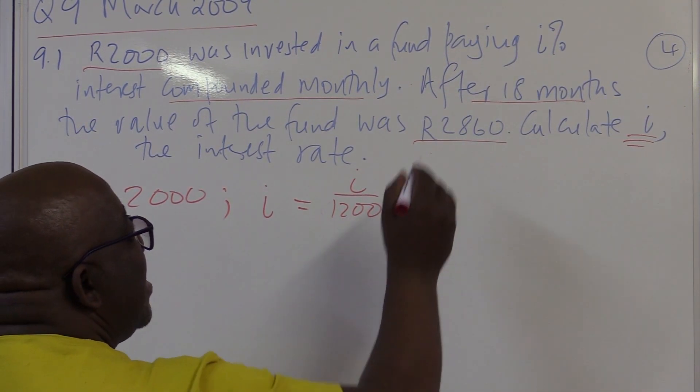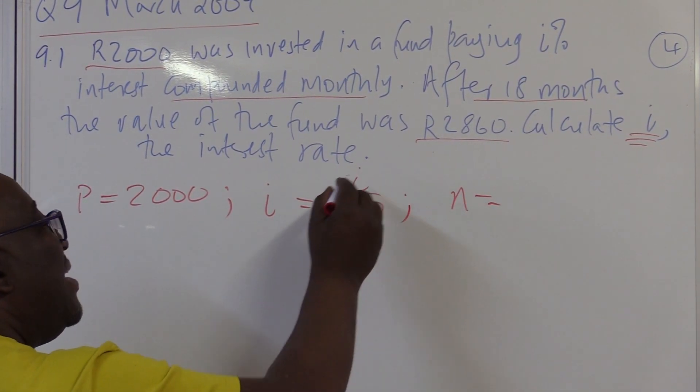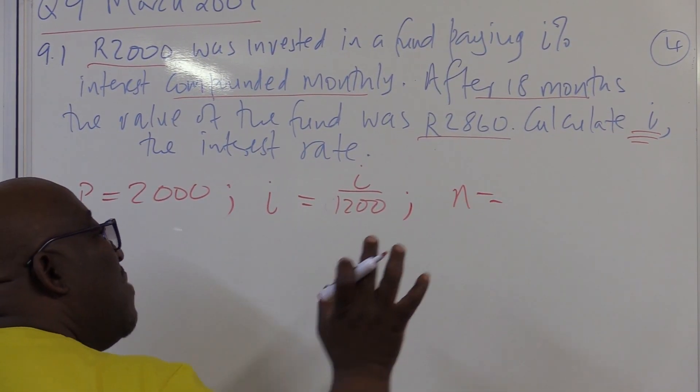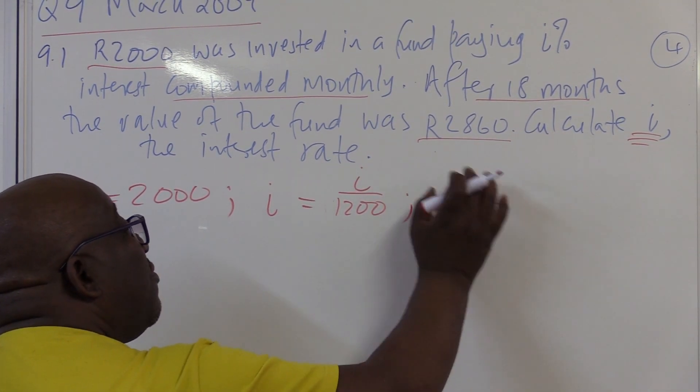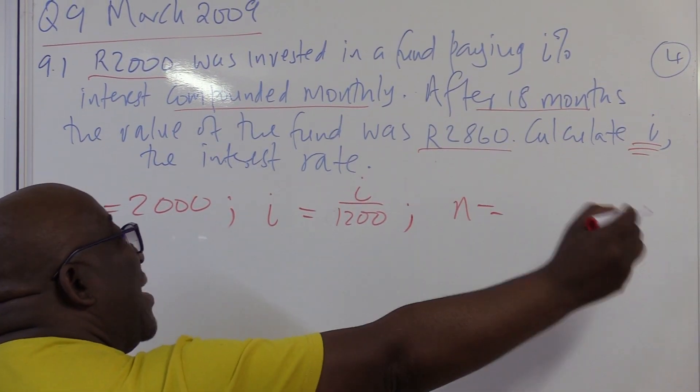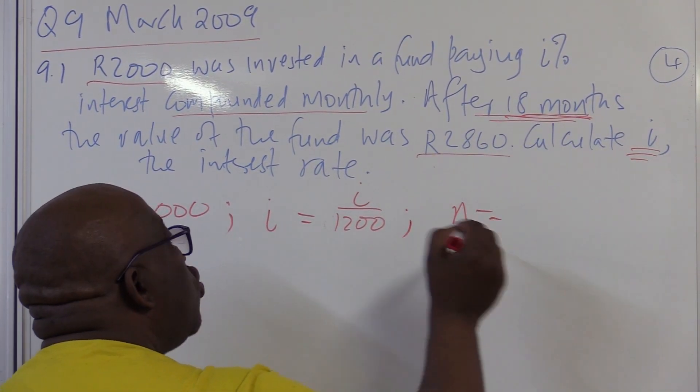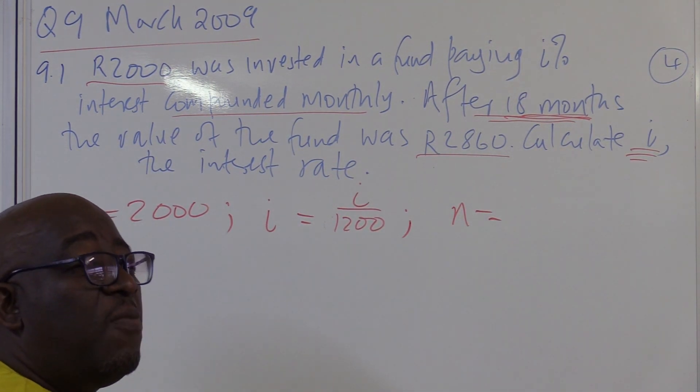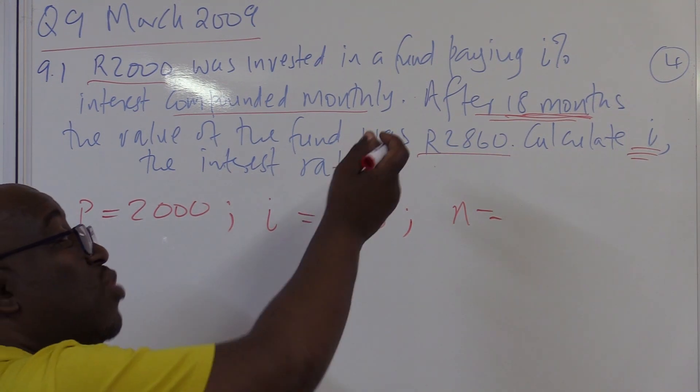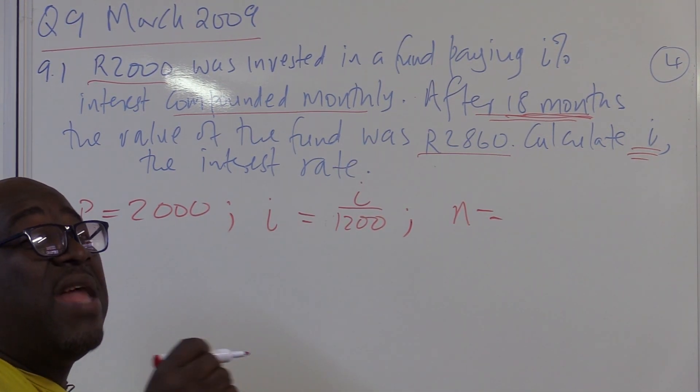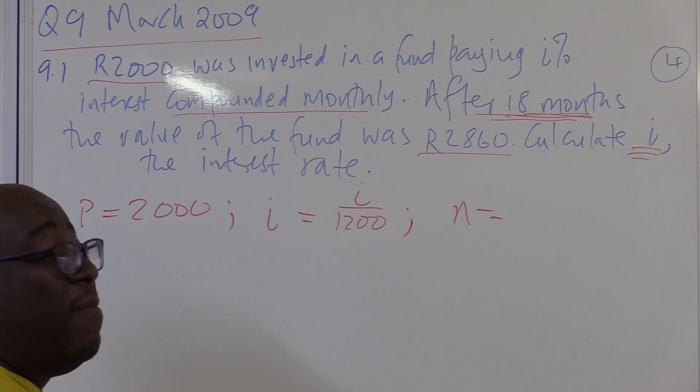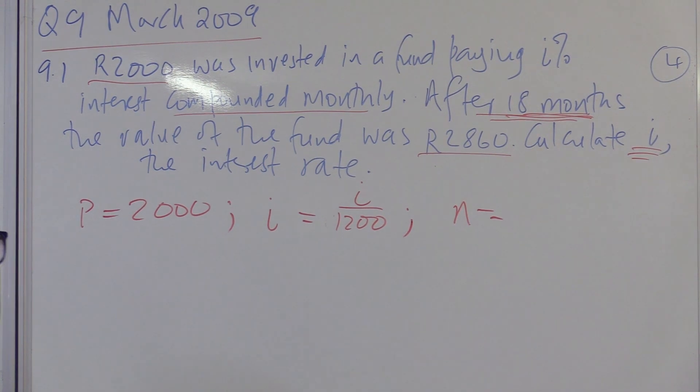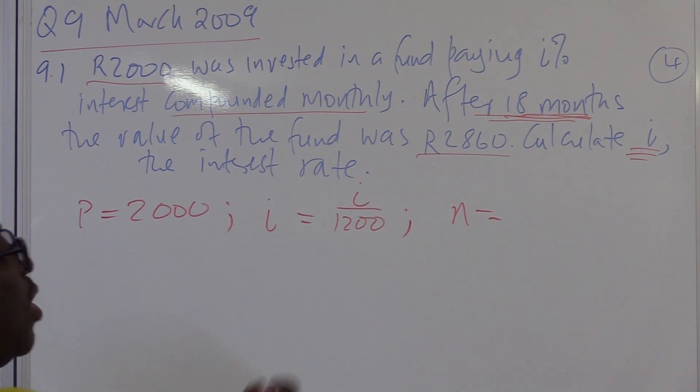After 18 months, there comes my N. Remember when I divide I by 12, I've got to multiply N by 12. What am I doing when I'm multiplying N by 12? I'm changing it from years into months. But in this particular case, we're already given into months, so we don't have to multiply by 12. So it will be 18 months.